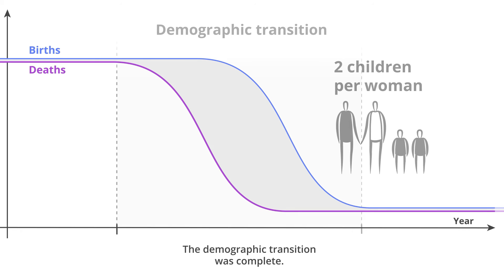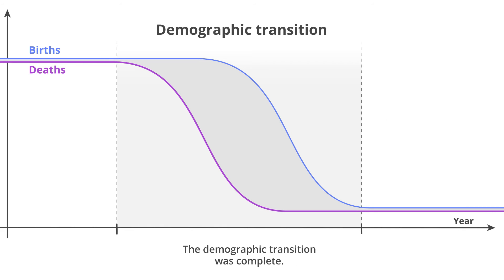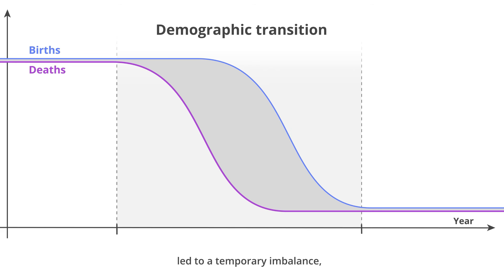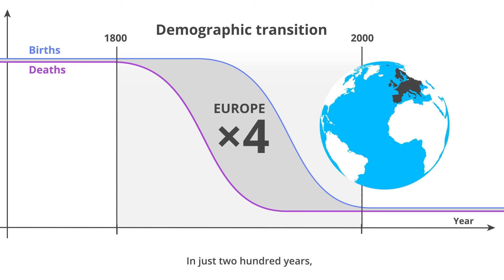The demographic transition was complete. The demographic transition in Europe lasted for two centuries. The fact that mortality had already fallen to a low level before birth rates started declining led to a temporary imbalance, resulting in rapid population growth during the transition period. In just 200 years, the population of Europe was multiplied by four.